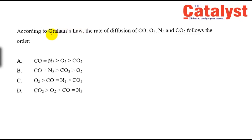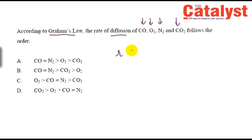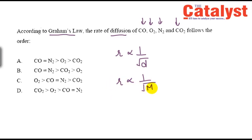The next question is about Graham's Law of Diffusion. We have four gases: carbon monoxide, oxygen, nitrogen, and CO2. As we know, Graham's Law states that the rate of diffusion is inversely proportional to the square root of the molar mass of the gas.